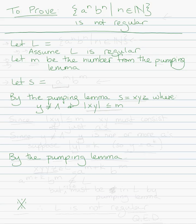If we find a contradiction with the pumping lemma, then we're going to say L is not regular, so we have a contradiction. Our only assumption in this whole proof was that L was regular, so therefore, since we have a contradiction, we can write 'therefore L is not regular, QED.'